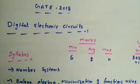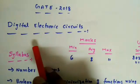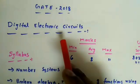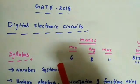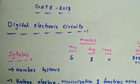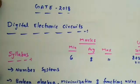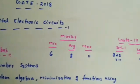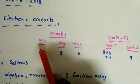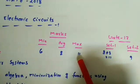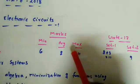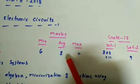In this lecture, I'm going to give a small introduction about digital electronic circuits for GATE preparation. The minimum marks from digital circuits is six marks, maximum is 11 marks, and on average we will get eight marks.